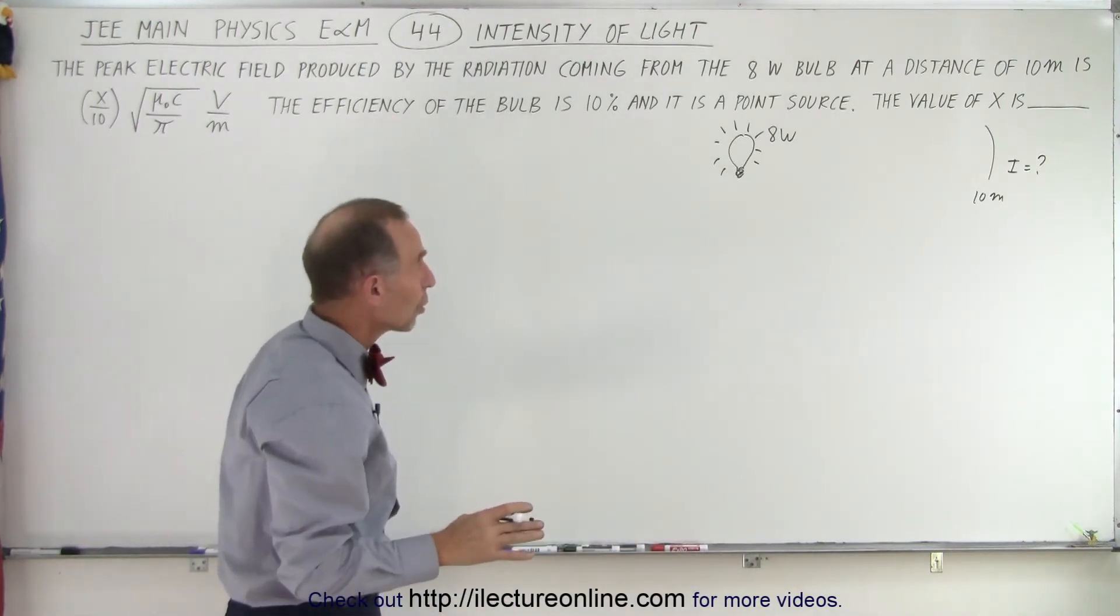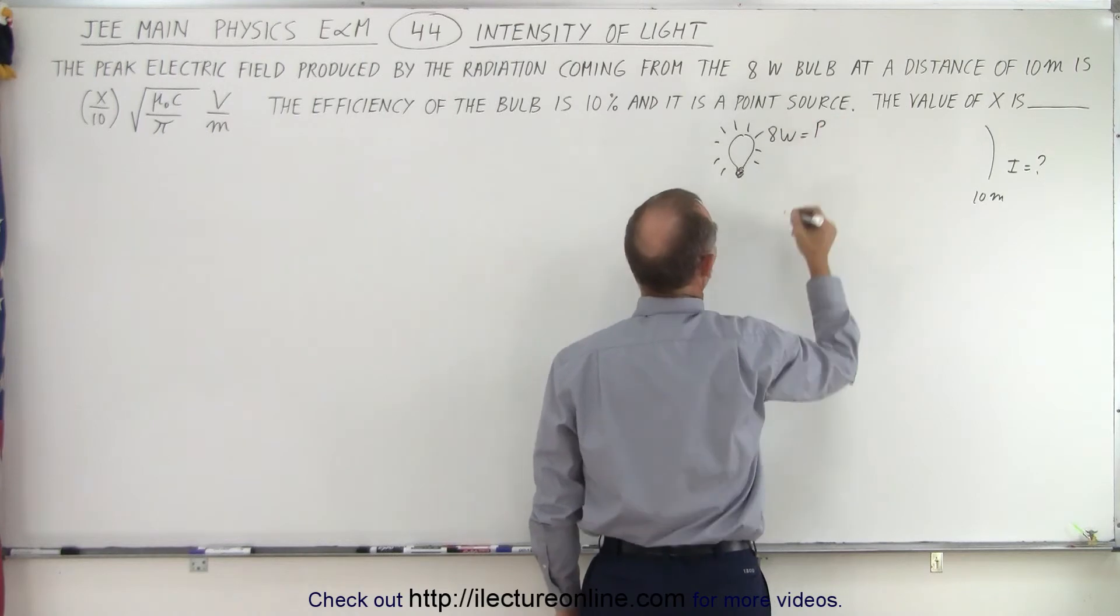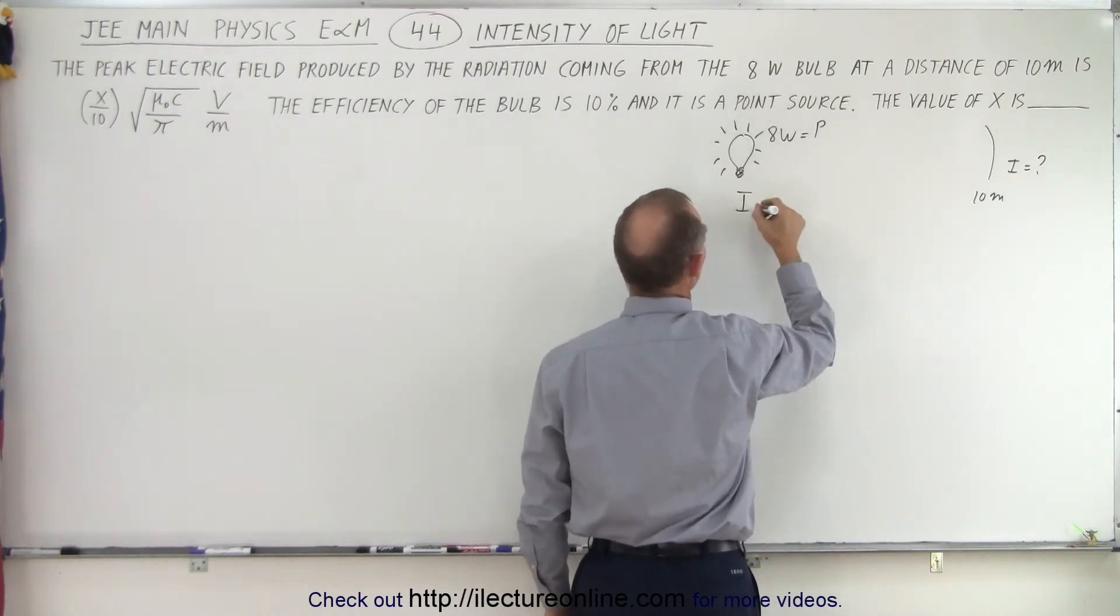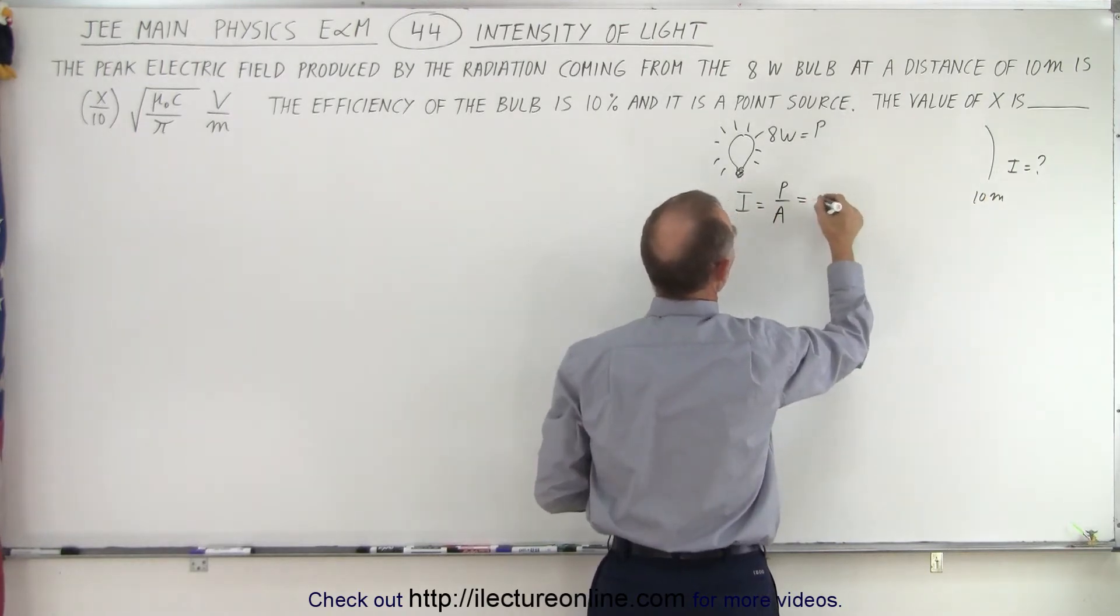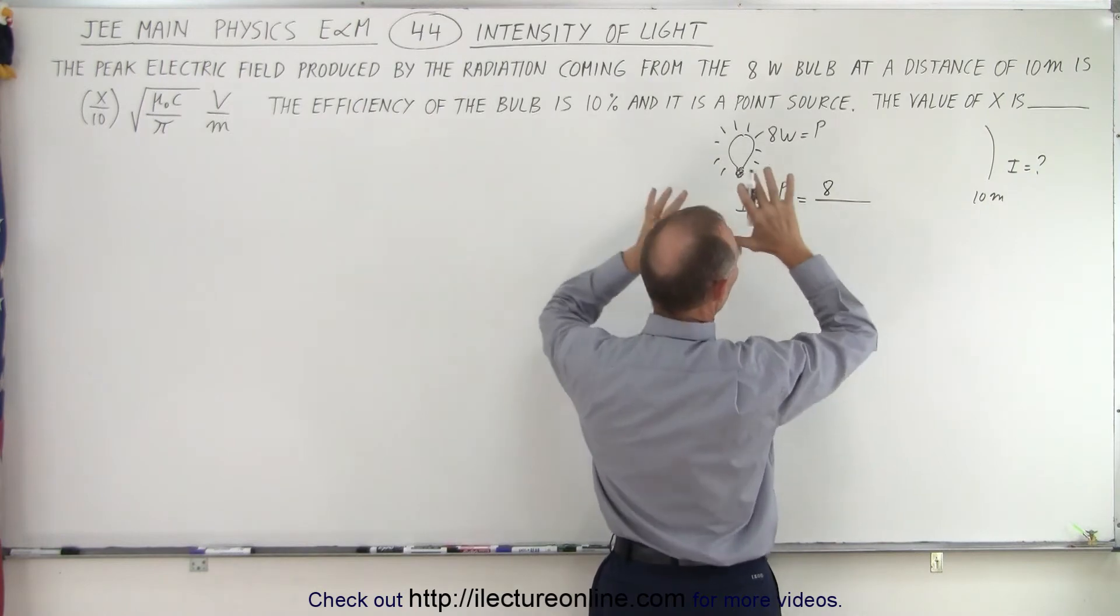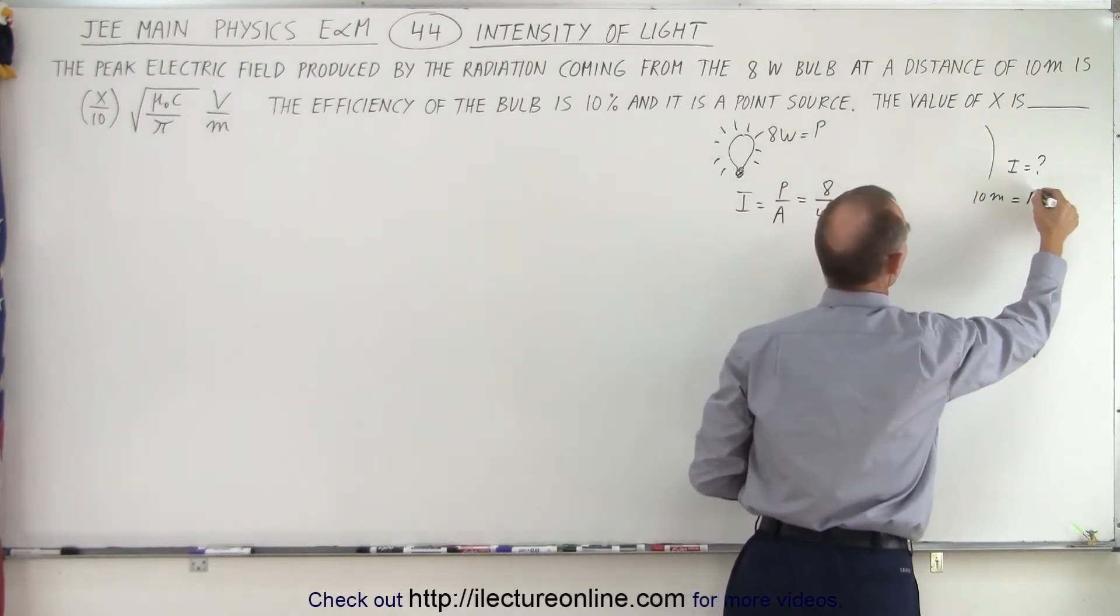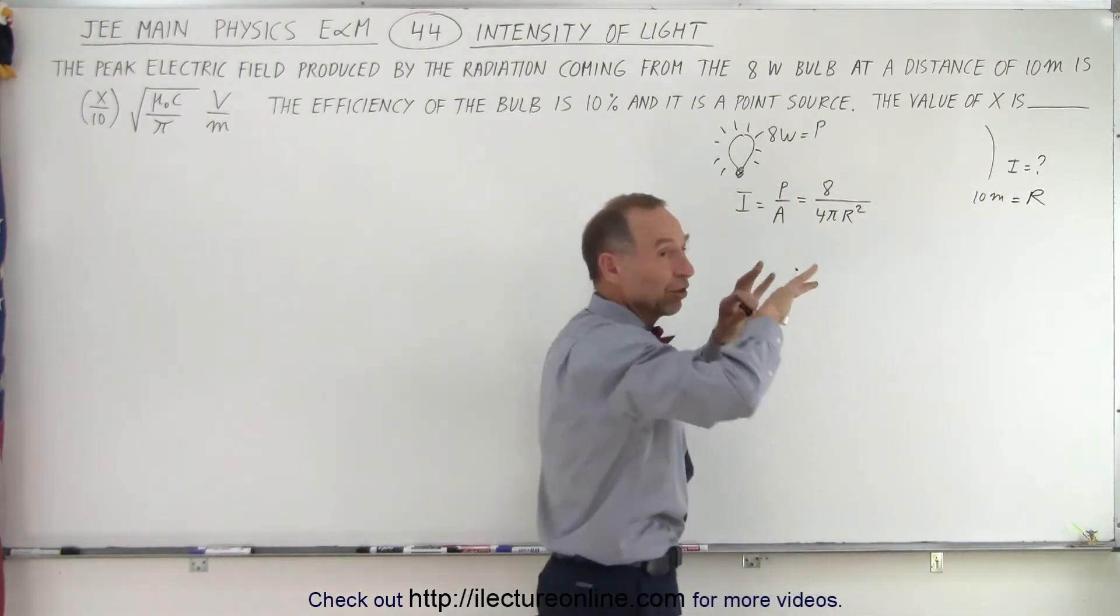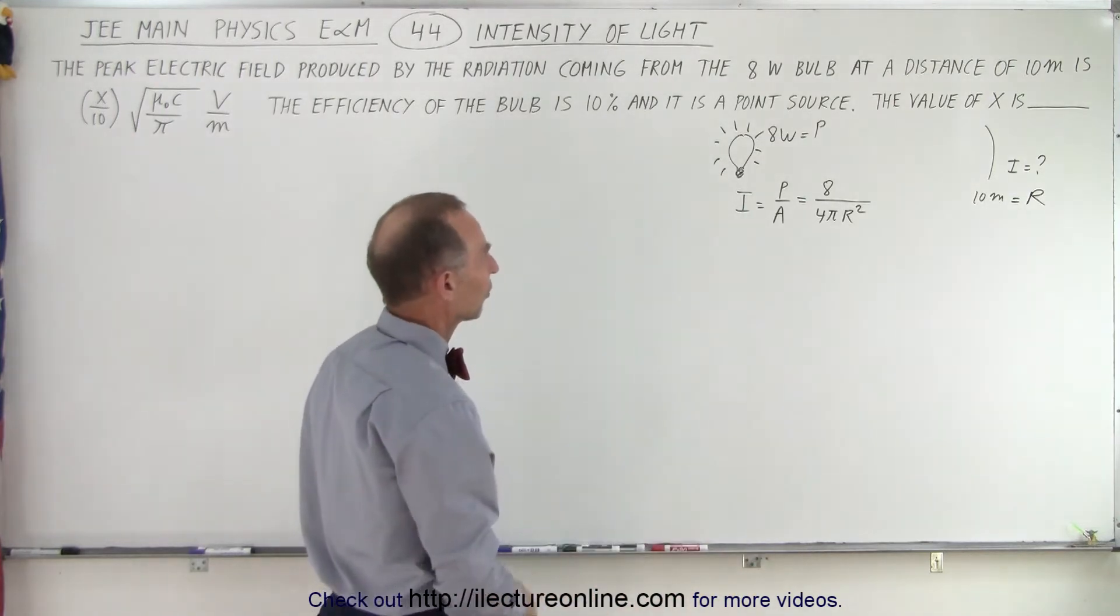So the first thing we need to know is the relationship between intensity and power, because this is the power output of the light bulb. We say that intensity is equal to the power divided by the area over which it spreads. So this would be equal to 8 watts divided by the area which is 4 pi r squared. So that would be 4 pi times r squared, r being equal to 10 meters and 4 pi r squared is essentially the surface area of a sphere over which the light spreads. So that gives us an equation for the intensity.